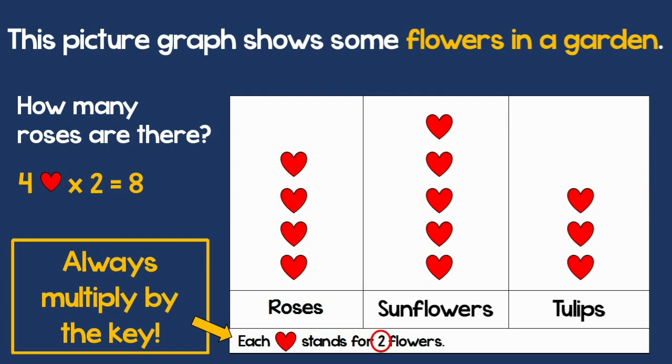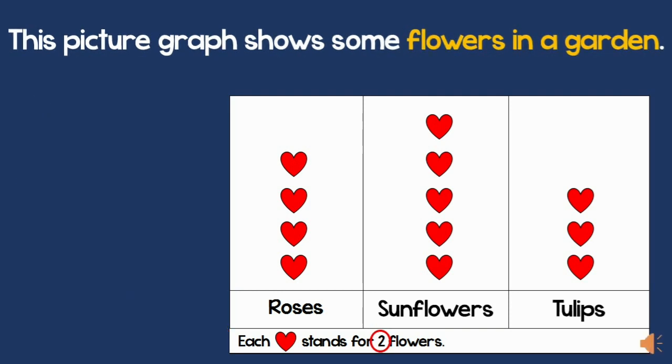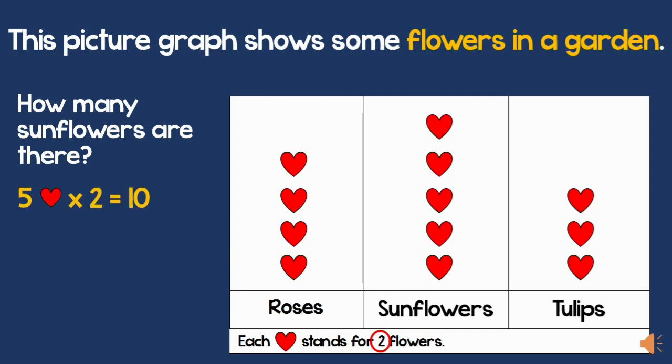Remember, check the key before anything else. Now let's see how many sunflowers are there. There are 5 hearts. So I will multiply 5 hearts by 2. There are 10 sunflowers.